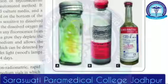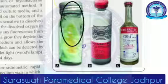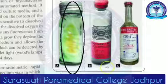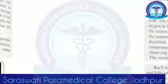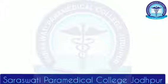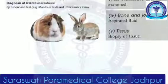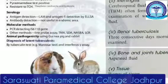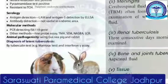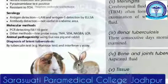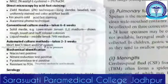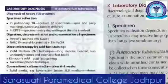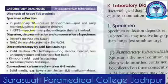This is how the Loewenstein-Jensen medium looks — this green one. You will have to draw this diagram showing rough, tough, buff-coloured colonies. Rough means it is rough in texture; buff means it is cream-coloured; tough means it will be very hard.